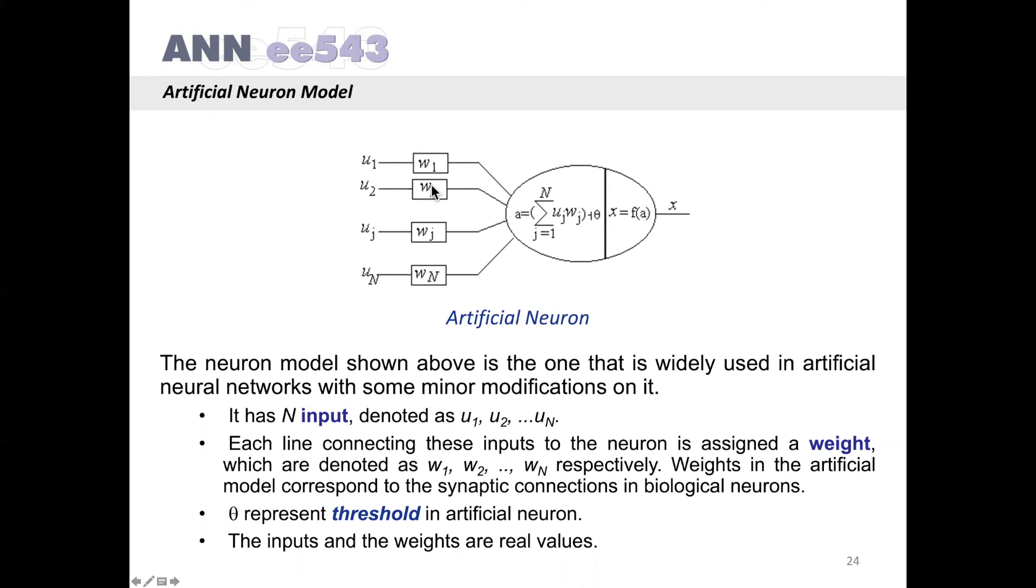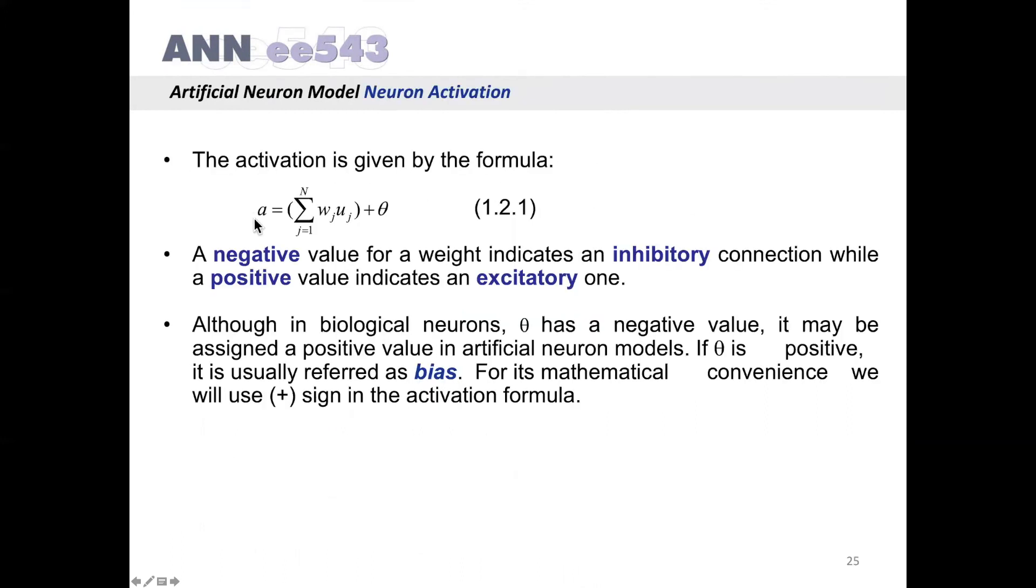The activation is given by the formula: activation equals summation j starting from 1 up to N, Wj multiplied by Uj plus Theta. A negative value for a weight indicates an inhibitory connection while a positive value indicates an excitatory one. Although in biological neurons theta has a negative value, it may be assigned a positive value in artificial neuron models. If theta is positive, it is usually referred to as bias. For mathematical convenience we will use plus sign in the activation formula. However, internal value of the theta can be negative or positive. It's a real value.